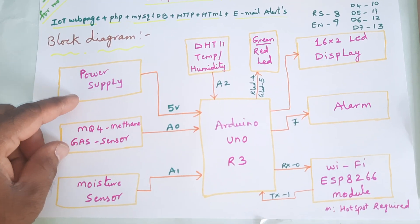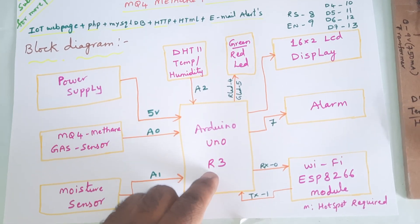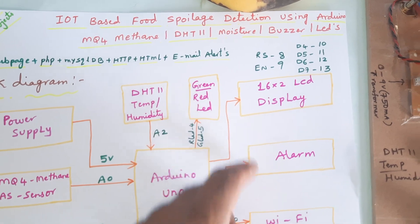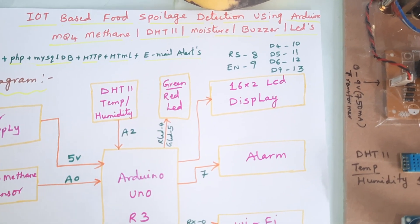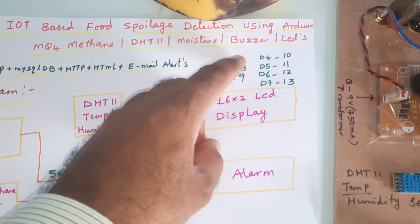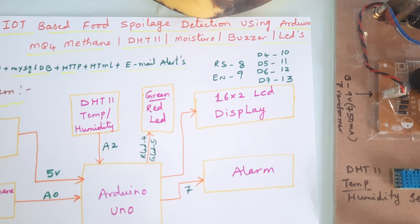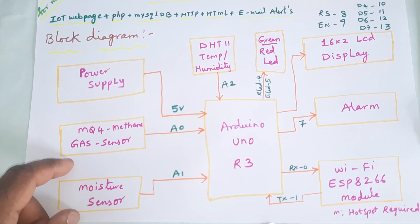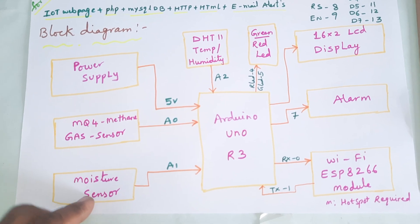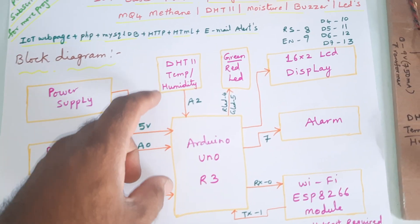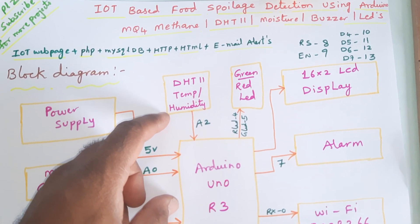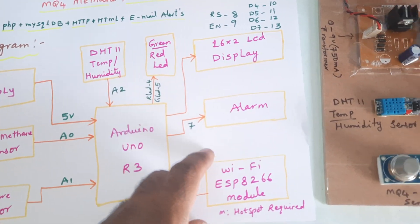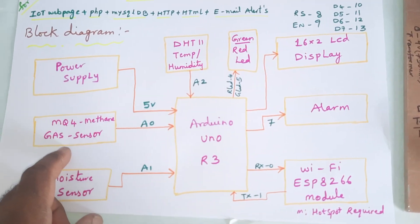The block diagram includes a 5-volt power supply board, Arduino Uno R3, a 16x2 LCD character display connected via RS, Enable, D4, D5, D6, D7 on pins 8 through 13, one MQ4 methane gas sensor, a moisture sensor, a DHT11 temperature and humidity sensor, one red LED, and one green LED.